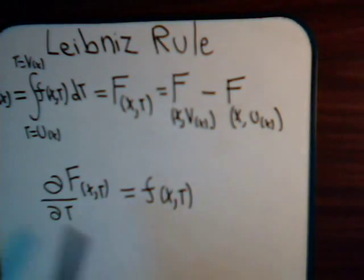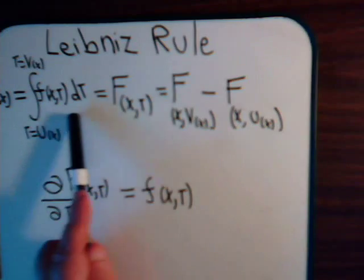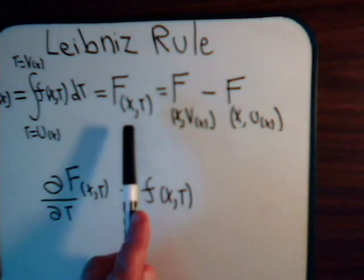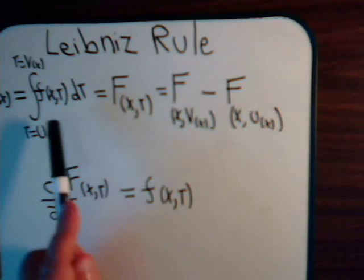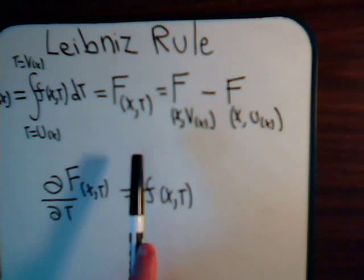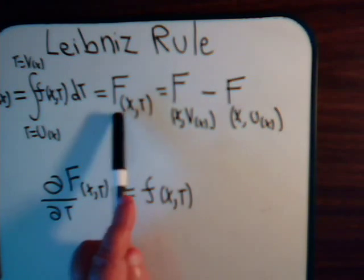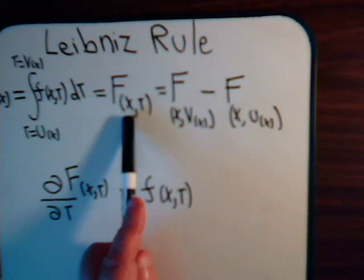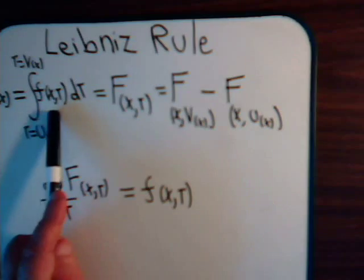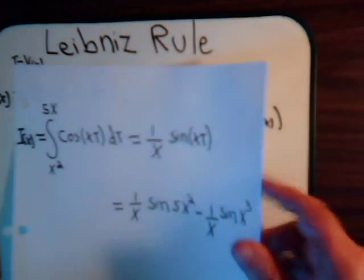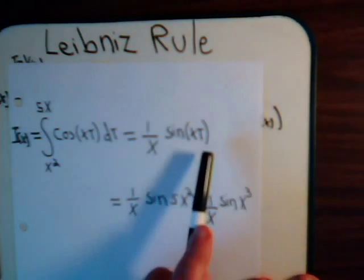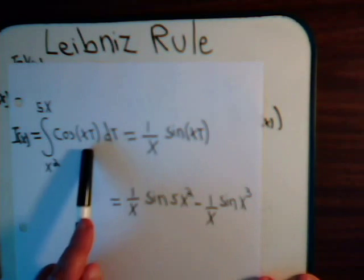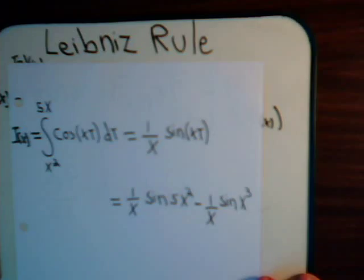Writing this out in more general form: integrals are anti-derivatives. So if we take the partial derivative of capital F(x,t) with respect to t, it gives us small f(x,t). Just like here — if we take the partial of this with respect to t, it gives us the cosine of xt.